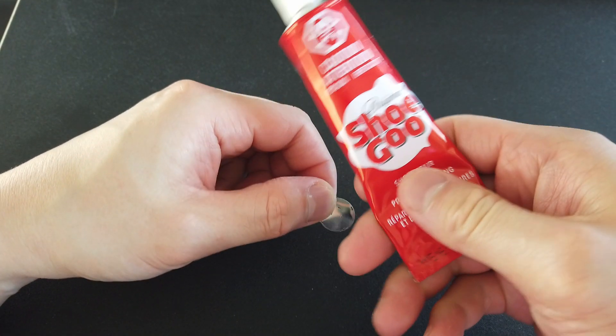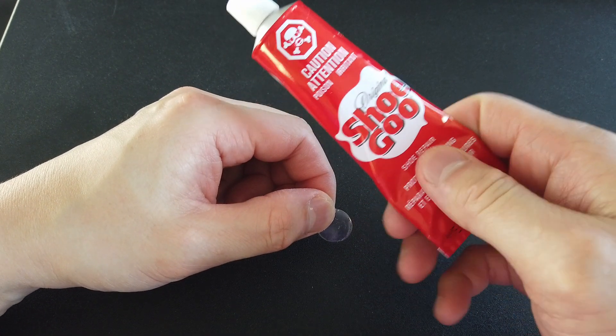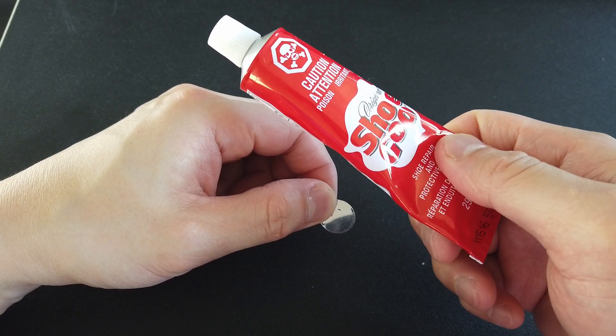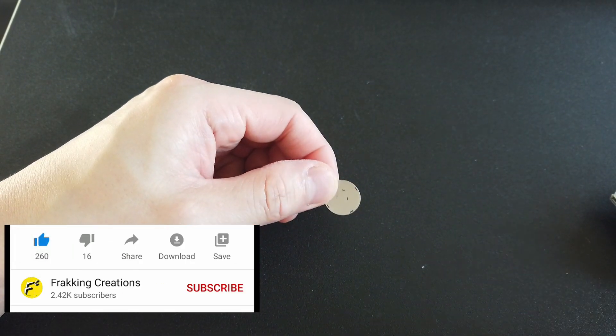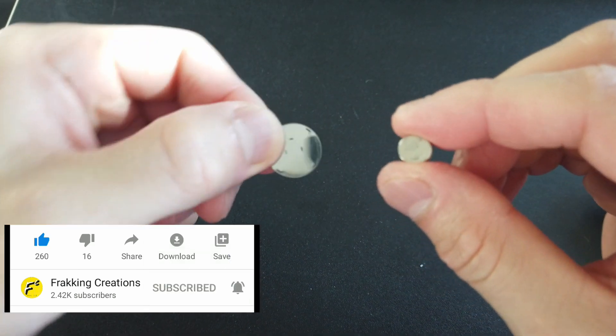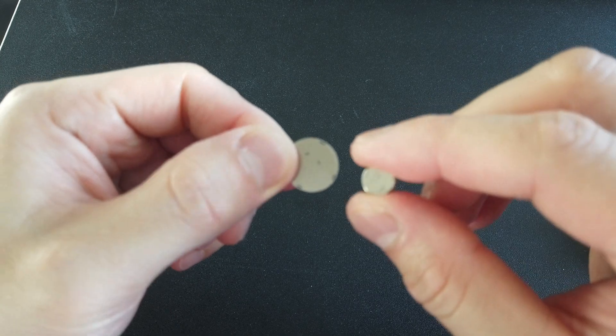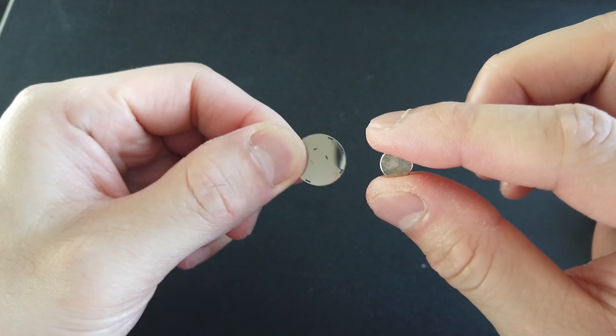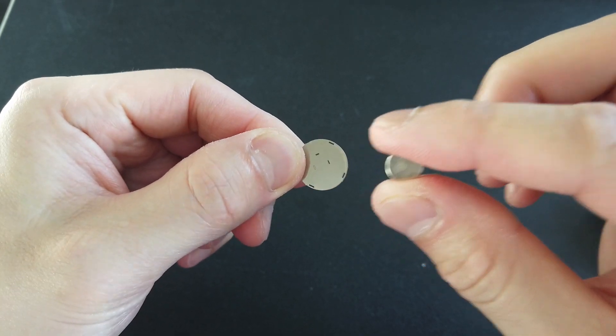So I'm just going to use some shoe glue, normally used for shoes, but you can use anything like silicone glue too, so that'll work as well. One thing to note is that when you have your rare earth magnet and you have your base here, when you start to apply the glue on and you stick this on, it will snap on, so you have to make sure you position it well before you let that happen.